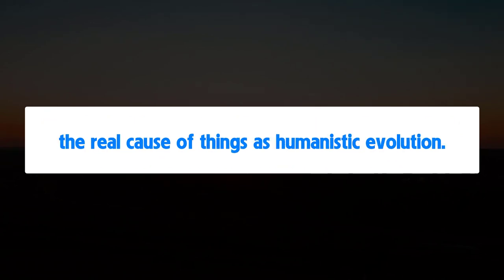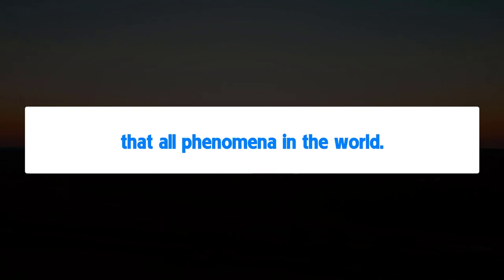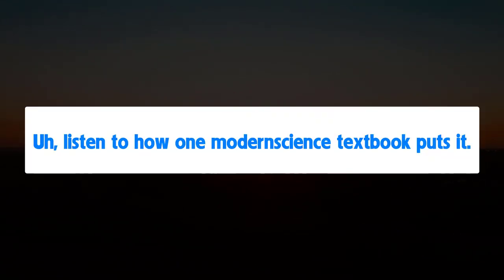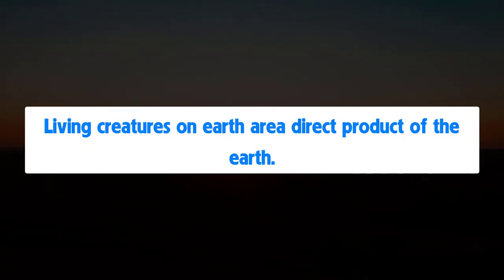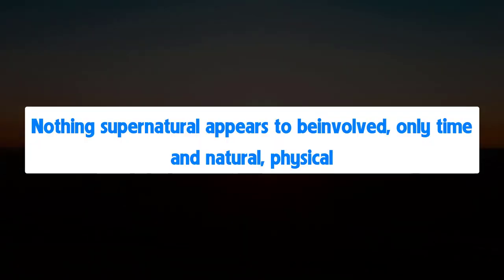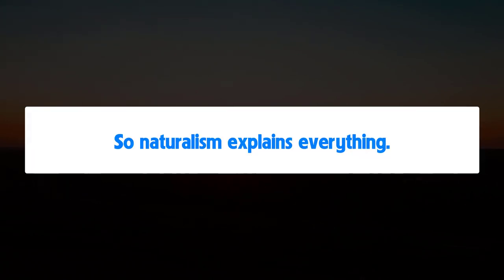The philosophy behind all of it is naturalism, which says that all phenomena in the world can be explained in terms of natural causes and laws. Listen to how one modern science textbook puts it: 'Living creatures on earth are a direct product of the earth. There is every reason to believe that living things owe their origin entirely to certain physical and chemical properties of the ancient earth. Nothing supernatural appears to be involved. Only time and natural, physical, and chemical laws operating within the peculiarly suitable environment.'